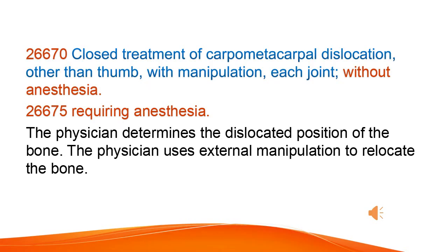Closed treatment of carpometacarpal dislocation, other than thumb, with manipulation, each joint, without anesthesia and requiring anesthesia. The physician determines the dislocated position of the bone, then uses external manipulation to relocate the bone.